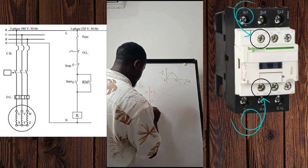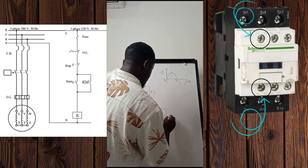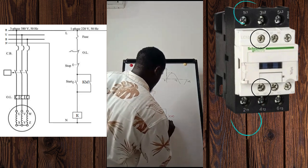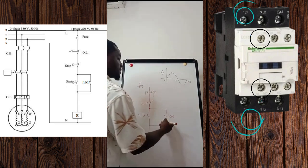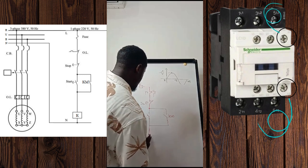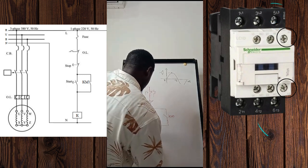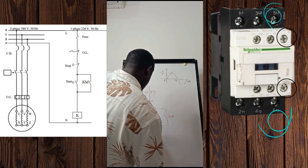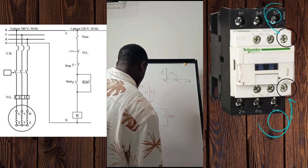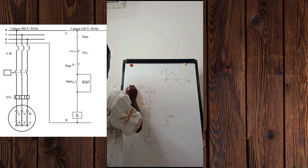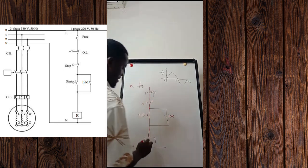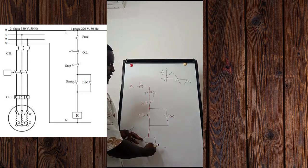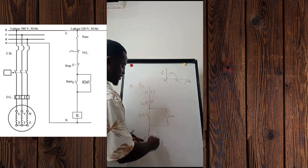Here we have our contactor, which is KM. We connect to the normally open contact of the contactor, which in this case is going to be 13-14 of the contactor. Then we have our coil, connected back to the neutral. This is the phase and this is neutral. So KM is the contactor — this is the coil of the contactor and this is the normally open contact of that same contactor, KM.